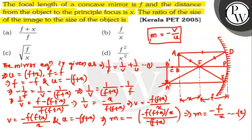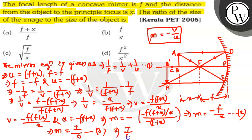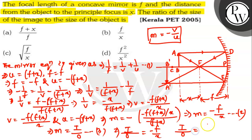We know that magnification is the ratio of the height of the image to the height of the object, so m = i/o. This is equation 3. From equations 2 and 3, we get i/o = −f/x. The negative sign indicates that the image formed is inverted. Ignoring the negative sign, i/o = f/x. This is the answer.